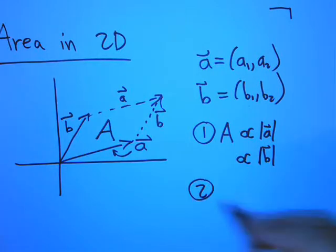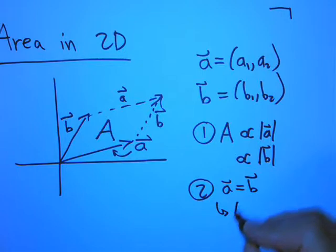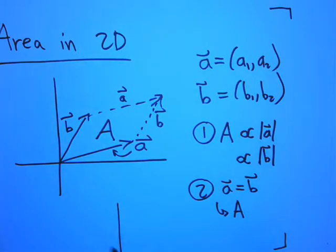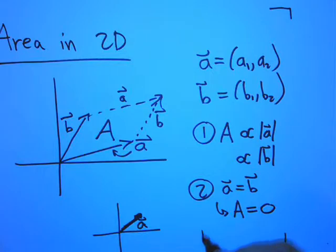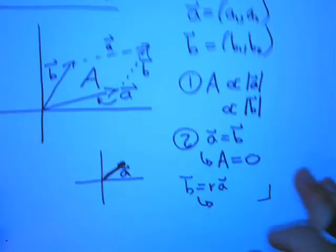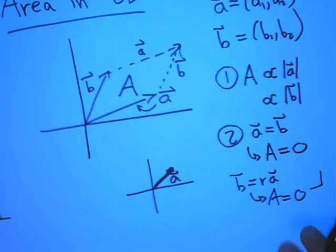Anyway, that's one of the things that A should satisfy. Another thing is that if A equals B, what do you think A should be in that case? Think about that for a second. Let's draw a picture. There's A, and there's A again. How big is that parallelogram if the area of that is zero? And in fact, even if B is some scalar multiple of A, then A should be zero.